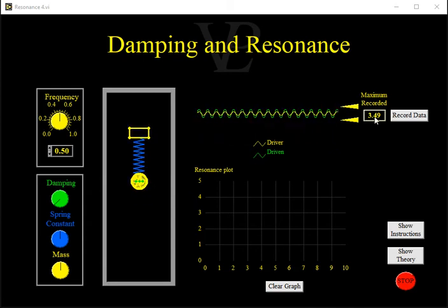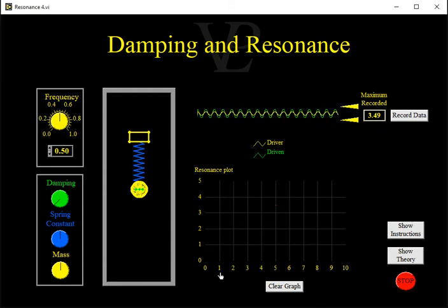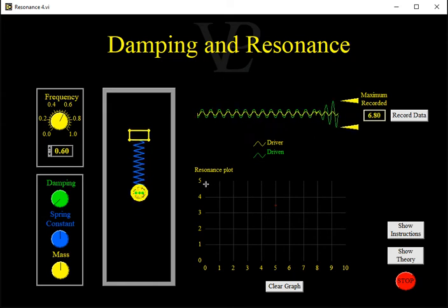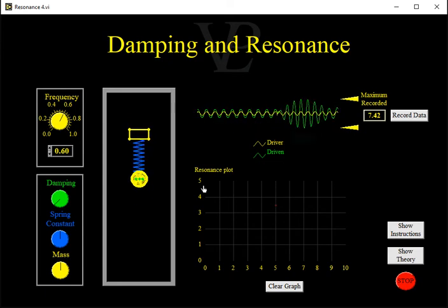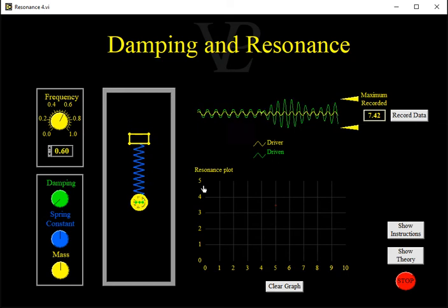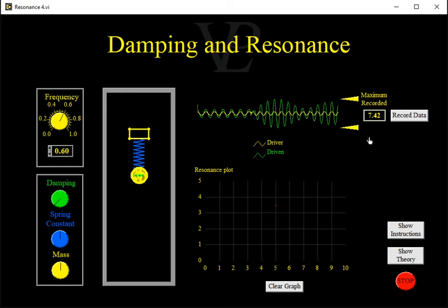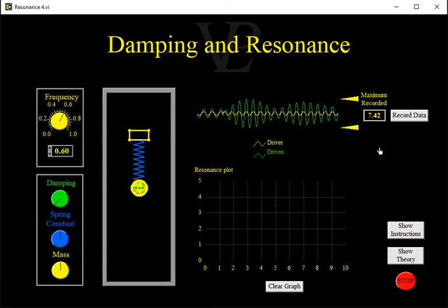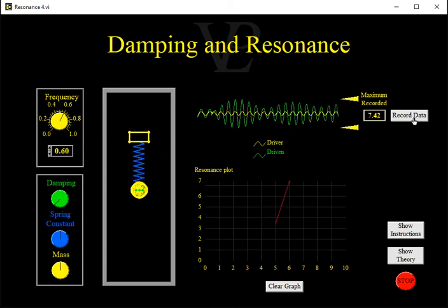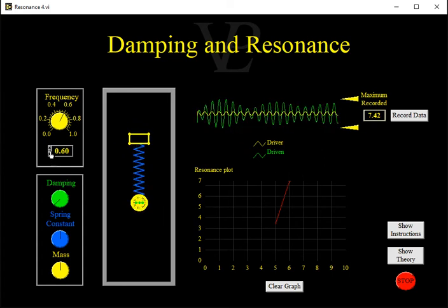When that value has stopped changing you can record the data and you'll see that a data point has been plotted on the graph. At that point let's change the frequency to 0.6 and immediately we can see that the effect of that on the driven object is that it's getting closer to a resonant frequency. Again what we'll do here is wait until that maximum recorded value stops going any higher and then we'll record the data and that will plot that on the graph.